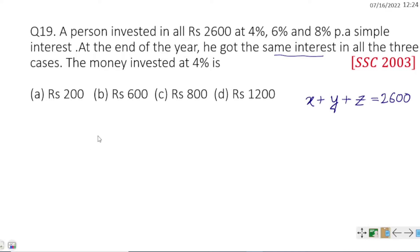For same interest, SI1 = SI2 = SI3. Using the simple interest formula: SI = PRT / 100.